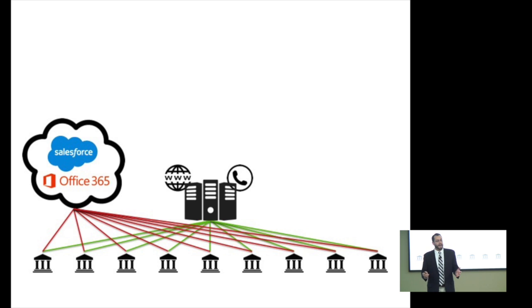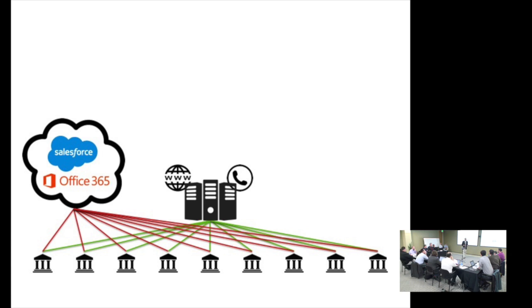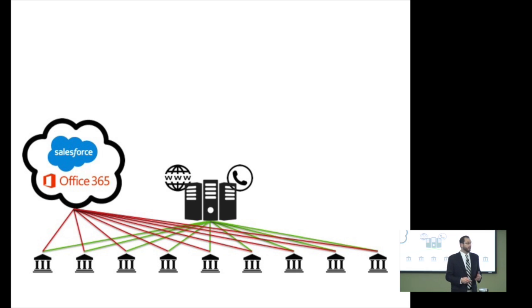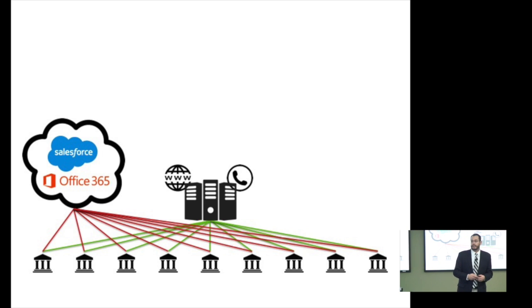Imagine you work for a bank and your job is ensuring that your bank branches have proper network operations and can access the applications and services they need to do their job. Those bank branches rely on applications in your company's data center — different types of applications and services, for example VoIP, as well as anything they might access via a web browser. There's also the public cloud where applications like Salesforce.com or Office 365 would run that they need to take care of customers and get the daily job of the bank done.